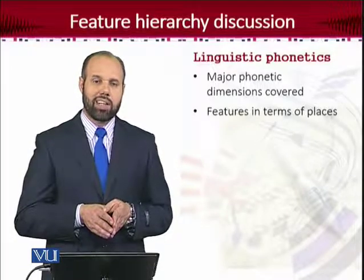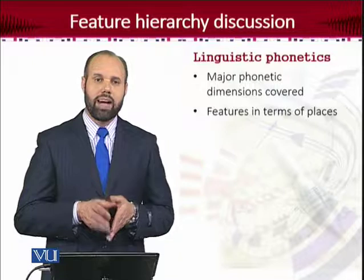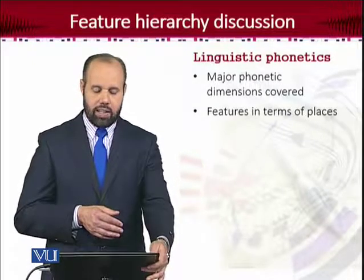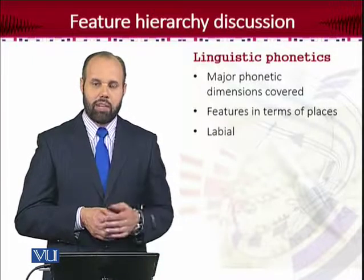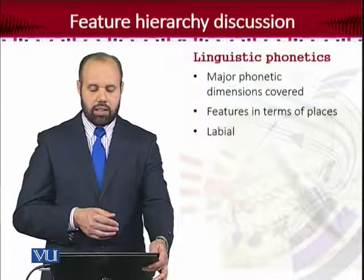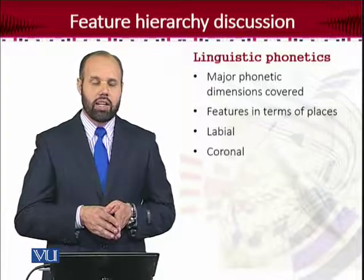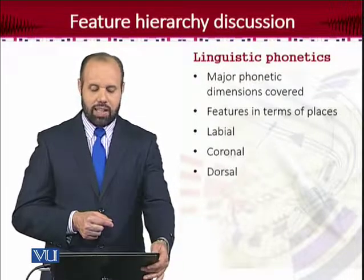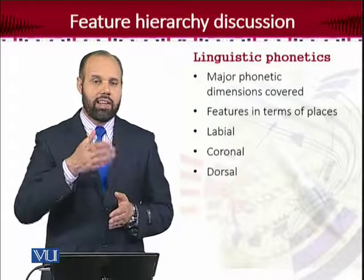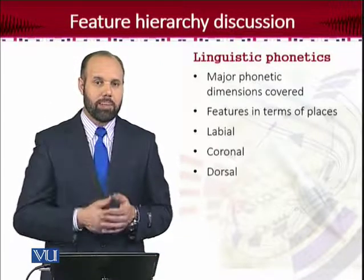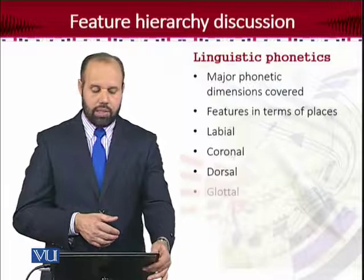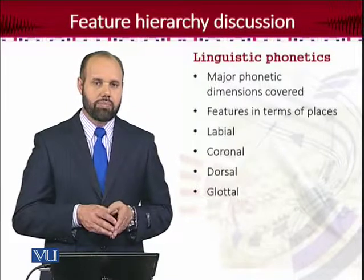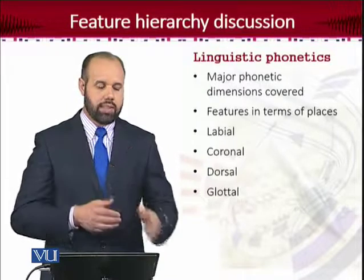So in order to describe the features of the place of articulation, there are various terms which must be known to you, although we might have been using them in this course. One is labial, when the sound is produced from the lips. Then the second one is coronal, when the tip and the blade of the tongue both are used. And then dorsal, when the back part of the tongue is used. And then glottal, when the glottis is used.